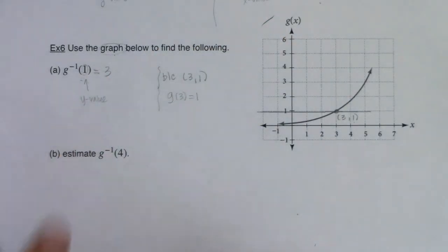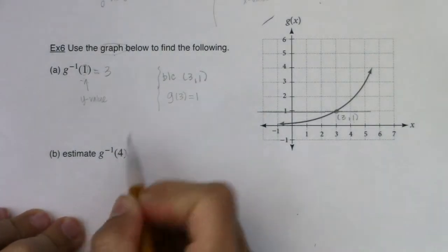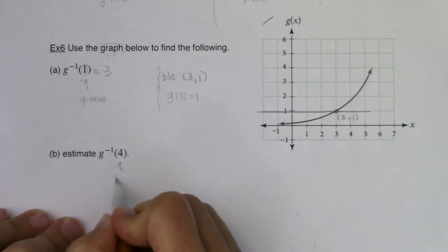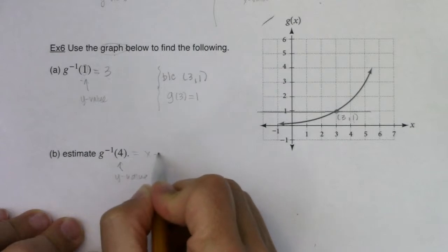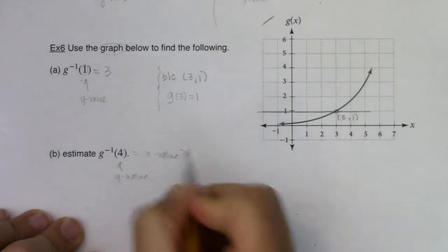Part b says estimate g of 4—oh excuse me, not g of 4, g inverse of 4. Because the inverse is here, this is representing a y value. I would like to know what was the x value that went with it.